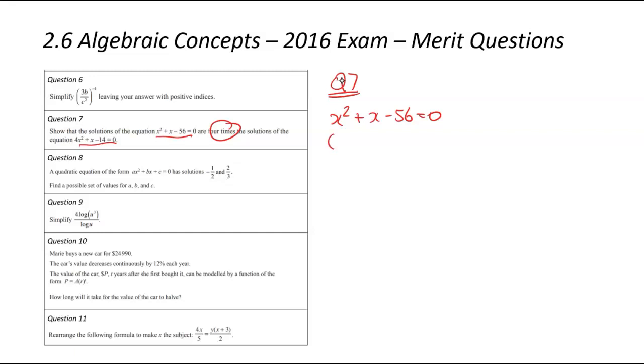So we've got x squared plus x minus 56 equals zero. You can use your calculator, but I'm going to factorize here. What numbers multiply to negative 56 and add to positive one? It's positive eight and negative seven. So it becomes x plus eight, x minus seven equals zero. So x1 equals negative eight, and x2 equals positive seven.